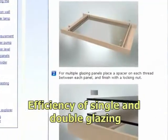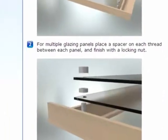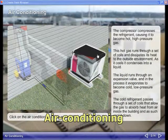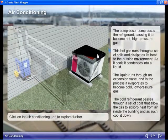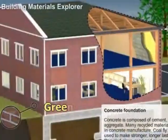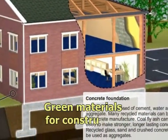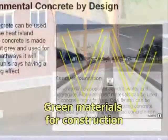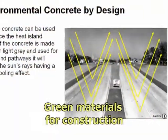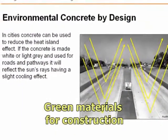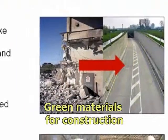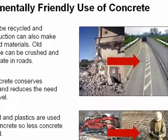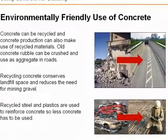Activities also include comparing the efficiency of single and double glazing and experimenting with a working model of an air conditioning system. Other activities in the module require students to evaluate environmental characteristics of materials used in construction, identifying examples of sustainable and recycled materials and how these are incorporated in modern construction.